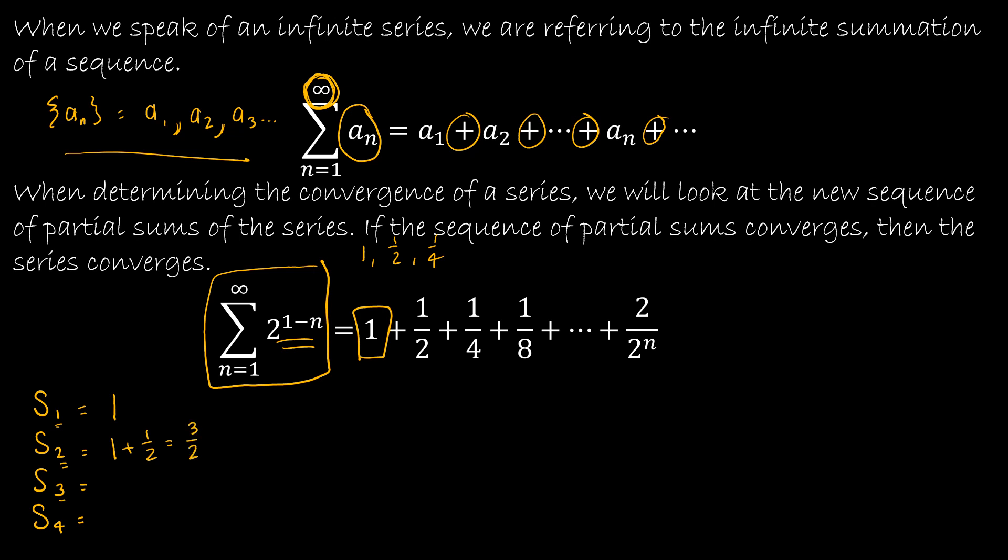Let's find S3. S3 would be 1 plus 1 half plus 1 fourth, which is 3 halves, or 6 fourths plus 1 fourth, giving us 7 fourths. And then S4 would be 1 plus 1 half plus 1 fourth plus 1 eighth. So this was 14 eighths plus 1 is 15 eighths.